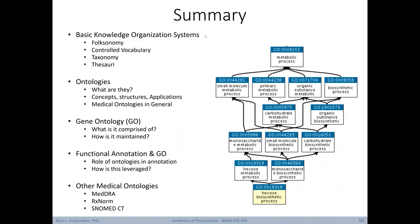Here's a summary of what we've covered in today's lecture. We started by talking about knowledge organization systems in general, diving a little bit into folksonomies, controlled vocabularies, taxonomies, and thesauri. Next, we moved to focus on ontologies. We learned what they are, concepts, structures, and applications, and a little bit about medical ontologies in general. Next, we learned about one of the most popular biological ontologies, that of the Gene Ontology or GO. We learned what it's comprised of and we learned a bit about how it's maintained.